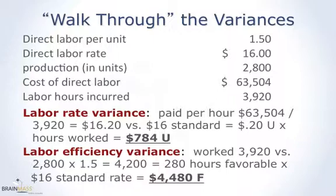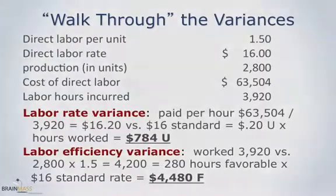The labor efficiency variance ignores what you actually paid — you just study how many hours were worked versus how many hours you should have worked. You compute the standard hours allowed by taking how many units you made times the hours allowed per unit. You made 2,800 units and were allowed one and a half hours each, so you should have used 4,200 hours. You used fewer hours than standard, so that's favorable. You multiply the difference times the standard rate — you always ignore the actual rate when computing the efficiency variance — to get a favorable variance.